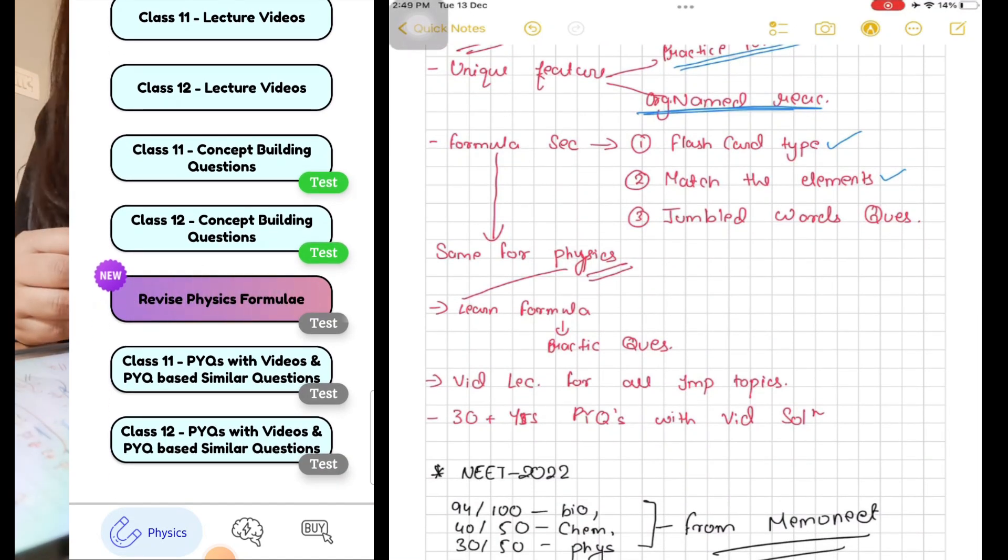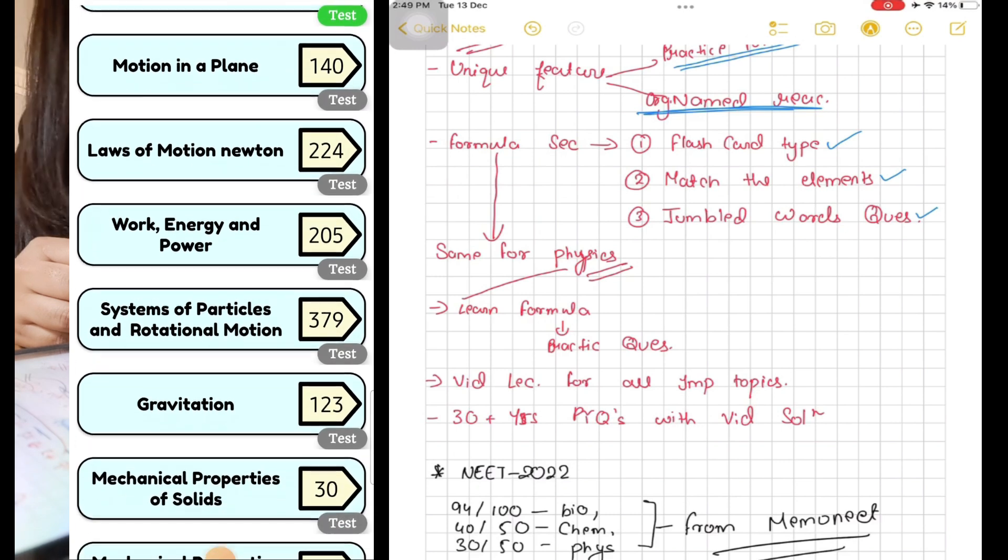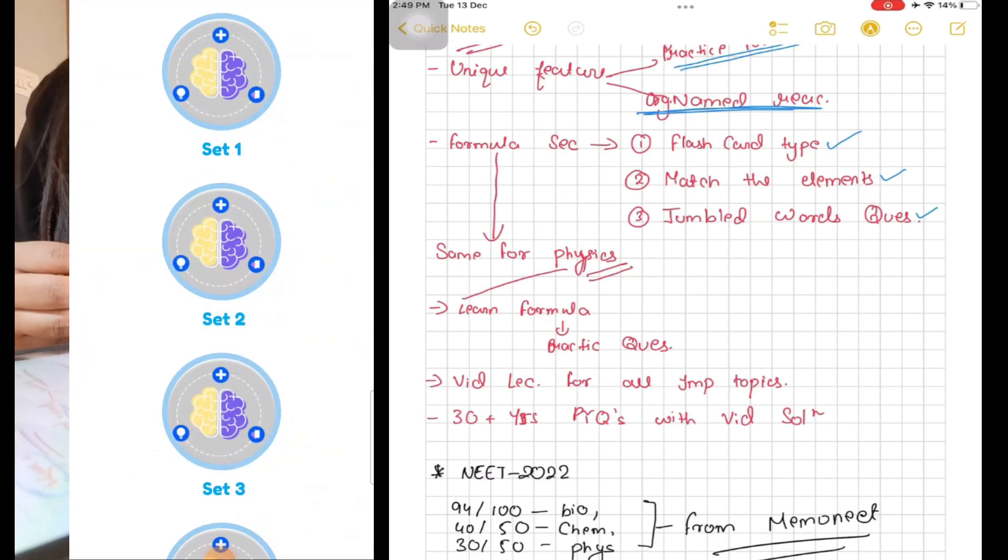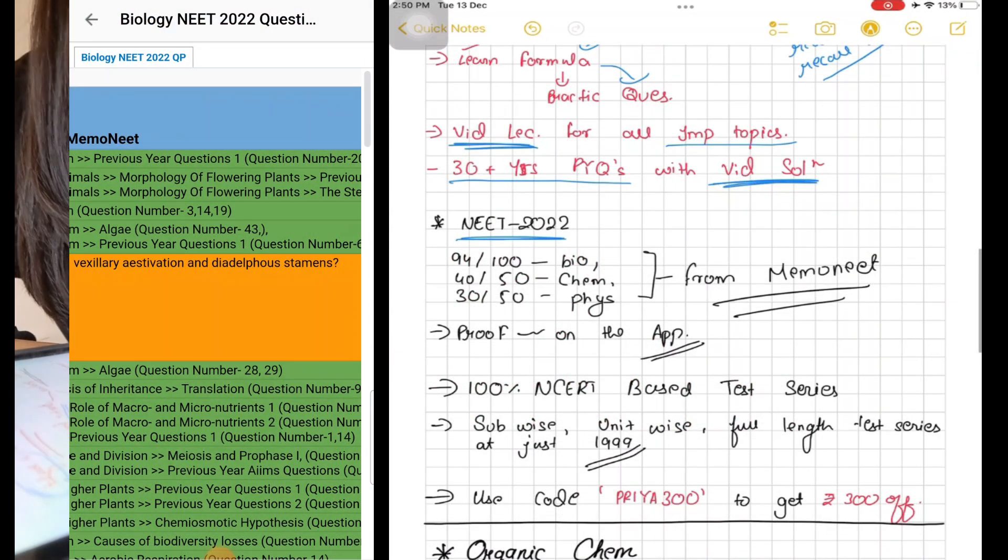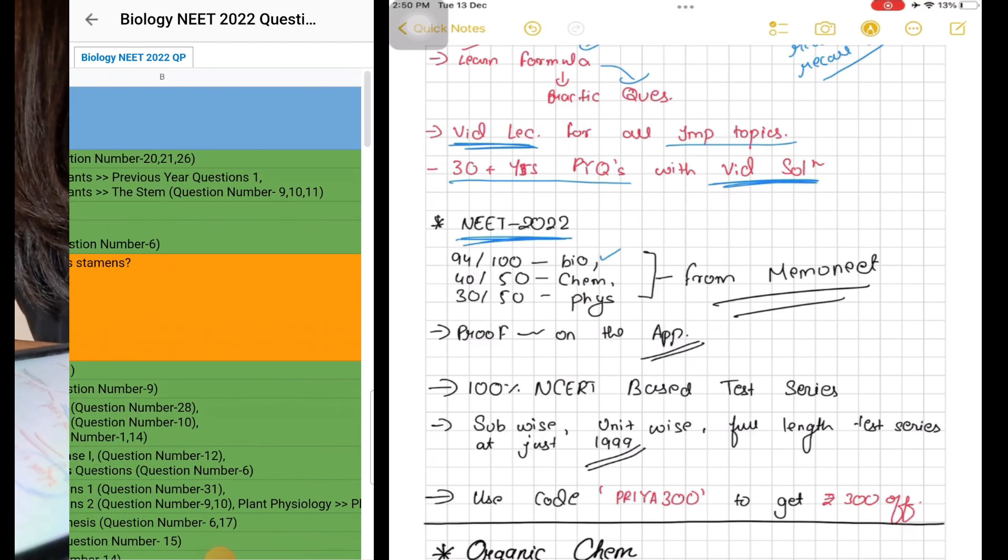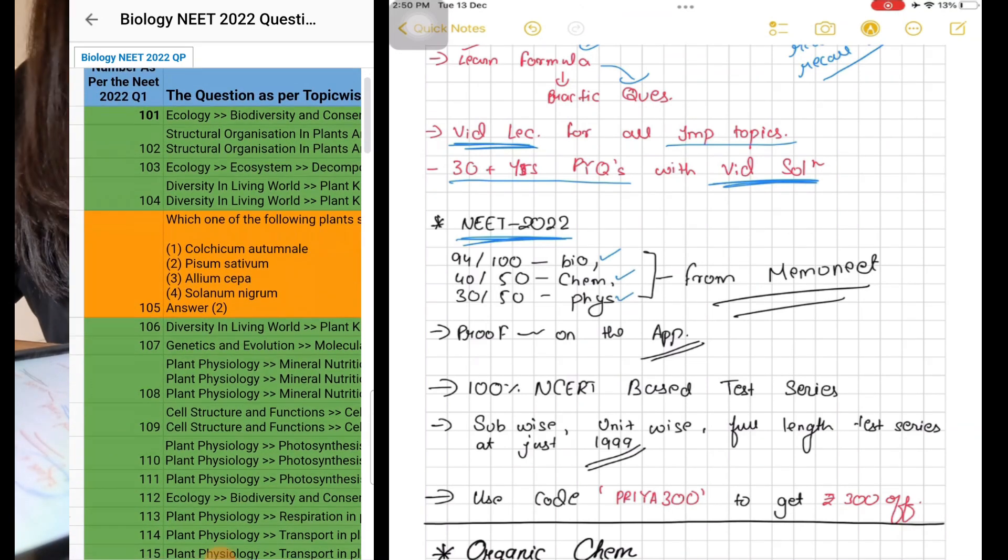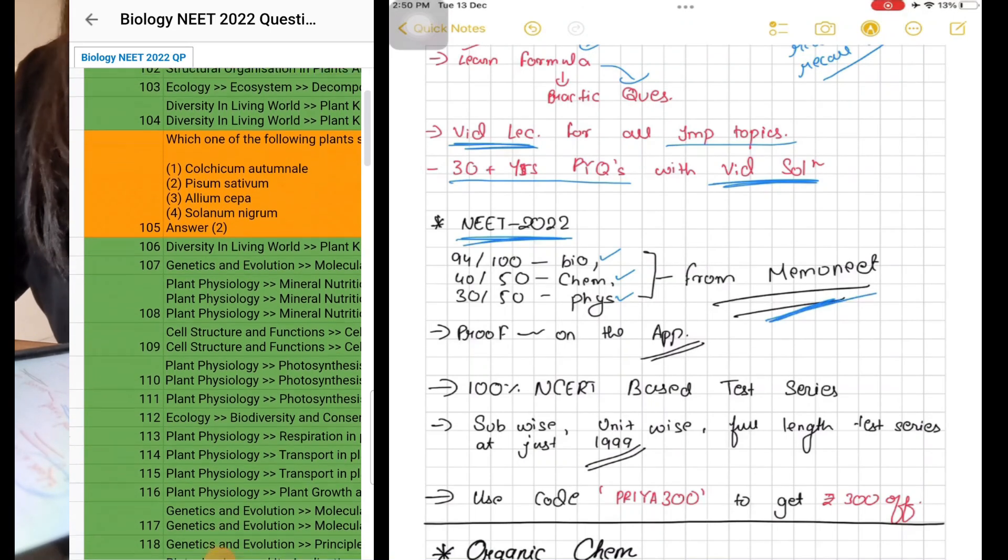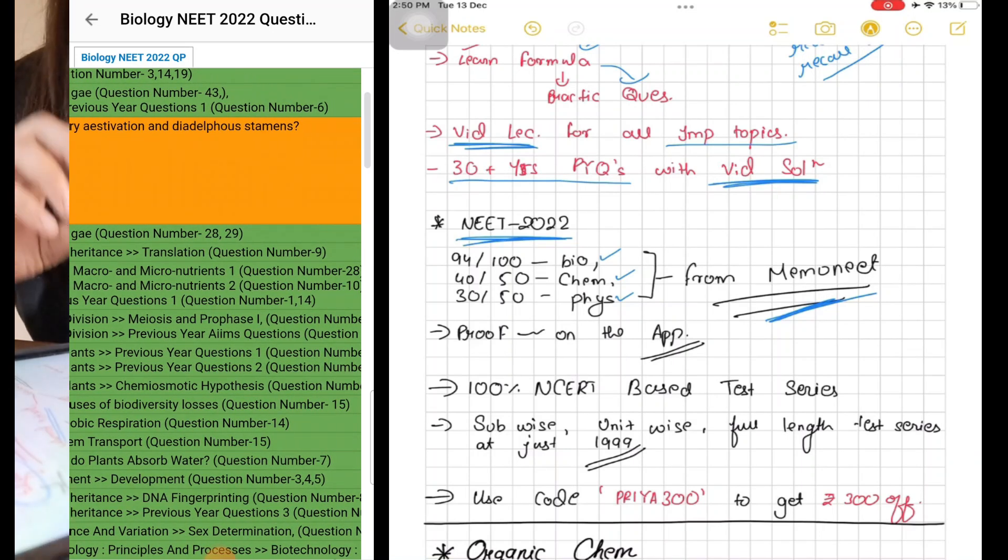You can find 30+ years of PYQs with video solutions. For each PYQ, two similar questions are framed to help you recognize and recall the method. In NEET 2022, 94 out of 100 in bio, 40 out of 45 in chemistry, and 30 out of 45 in physics questions came from Memo NEET app. These questions were either similar or directly came from the app.